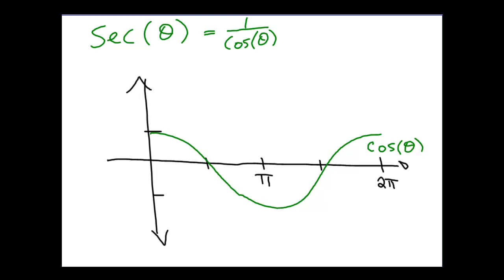They have a reciprocal relationship. One of the things that means is whenever cosine is 0, secant will have an asymptote. We're going to see some asymptotes in this graph. It will have an asymptote because if cosine is 0, since secant is defined as 1 over cosine, we would end up with 1 over 0, which is undefined. So our graph will have asymptotes at π/2 and at 3π/2.